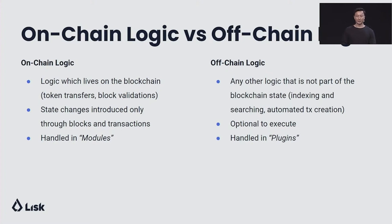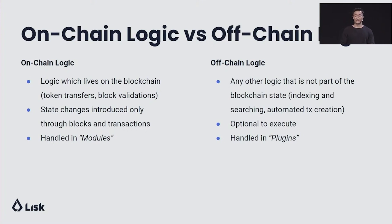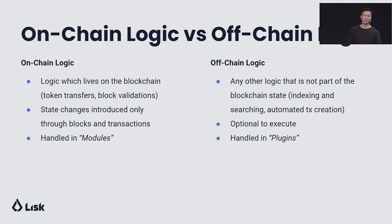On the right side, we have off-chain logic. Off-chain logic is any other logic that is not part of the blockchain state. For example, we have indexing and searching and automated transaction creation, among other functions. Off-chain logic is always optional to execute, and these are always handled in what we call plugins.